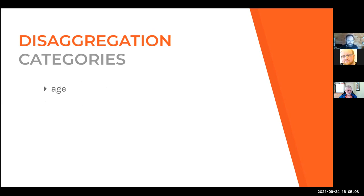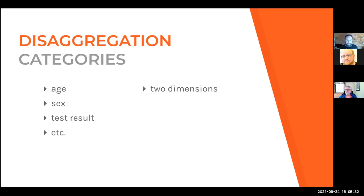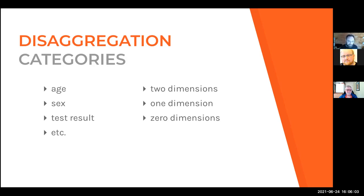The first kind of category we're going to talk about is a disaggregation category. Examples are age, sex, and test result — things that can be specified for a data value. We're going to show how this works with two dimensions, one dimension, and zero dimensions in the next few slides. You could have more than two dimensions — as many as your database and system performance can handle. But we'll illustrate with two, one, and zero, and hopefully you'll be able to generalize from there.